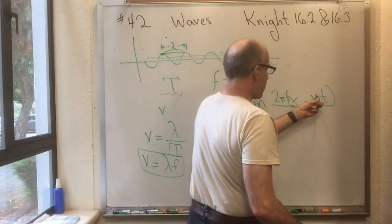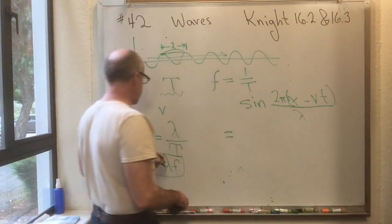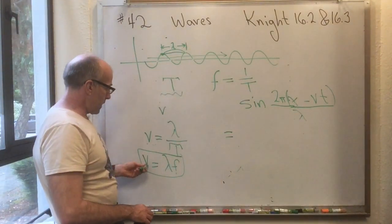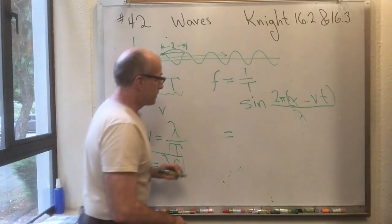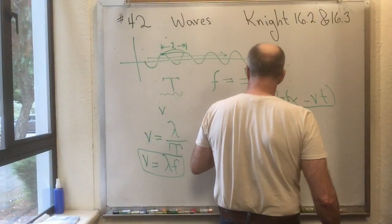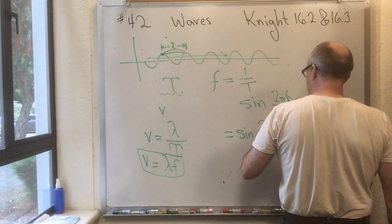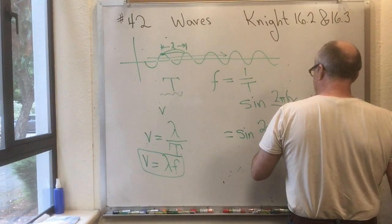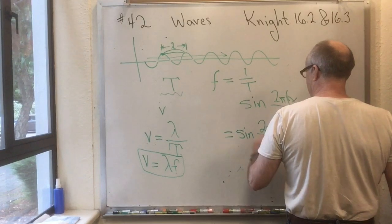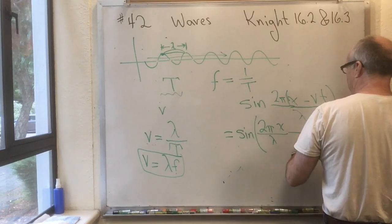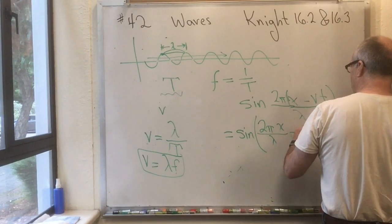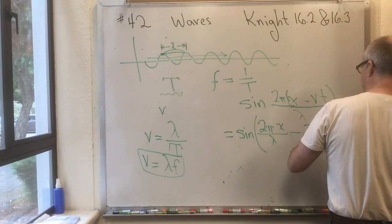V over lambda is F. So another way I can write this is sine of, and I've got my 2 pi, I've got my X, I've got my over lambda, but now I have a minus 2 pi F T.